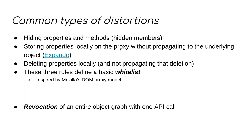These rules combine to define a basic whitelist, in my view, and my inspiration for these is Mozilla's DOM proxy model. Another distortion is revoking an entire object graph in a single API call. Revocation's initial motivation is garbage collection, but it also applies to the principle of least privilege — once Bob no longer needs access to his object graph, why does it continue to exist? Proxy gives us all these capabilities for an individual object; membranes are the equivalent for entire object graphs.